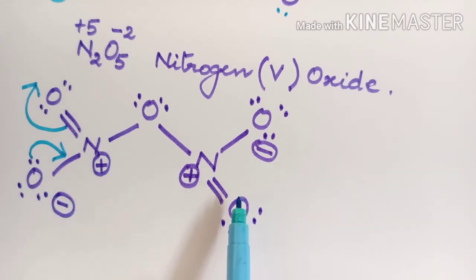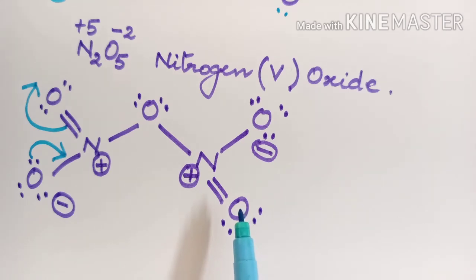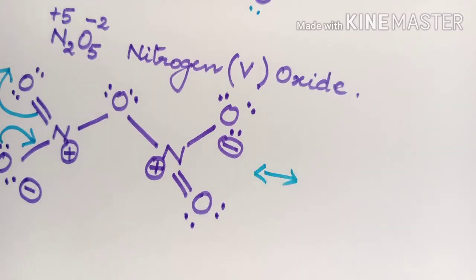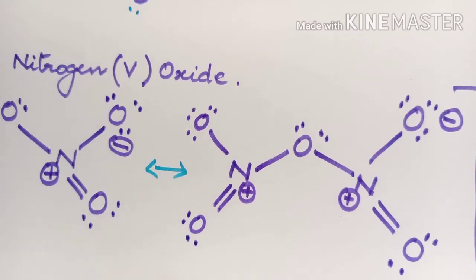Likewise, resonance can continue on the other side — a total of four canonical forms are possible for N₂O₅. This is also an acidic solid which is colorless in nature. Hope you have understood the resonance of the different oxides of nitrogen. Thank you.